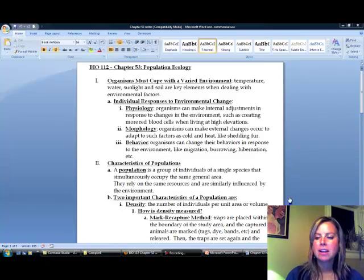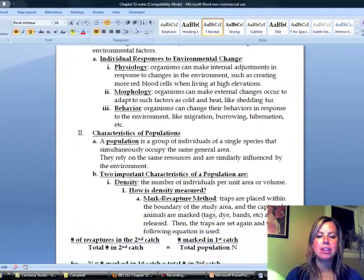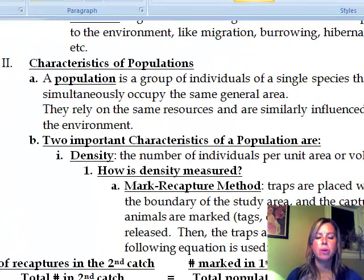Let's define a population. A population is going to be a group of individuals of one species that are occupying the same area. When we're all in the classroom together, we're a population of humans because we're all in the same little area and we're using resources and things like that.